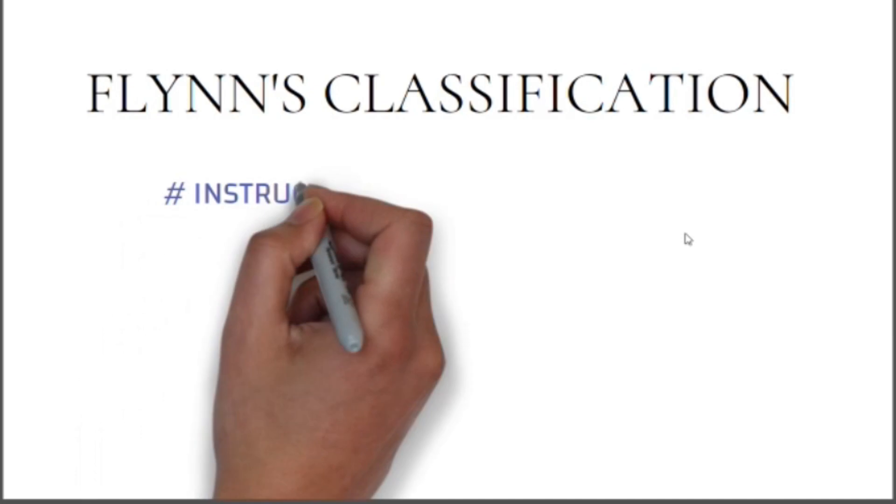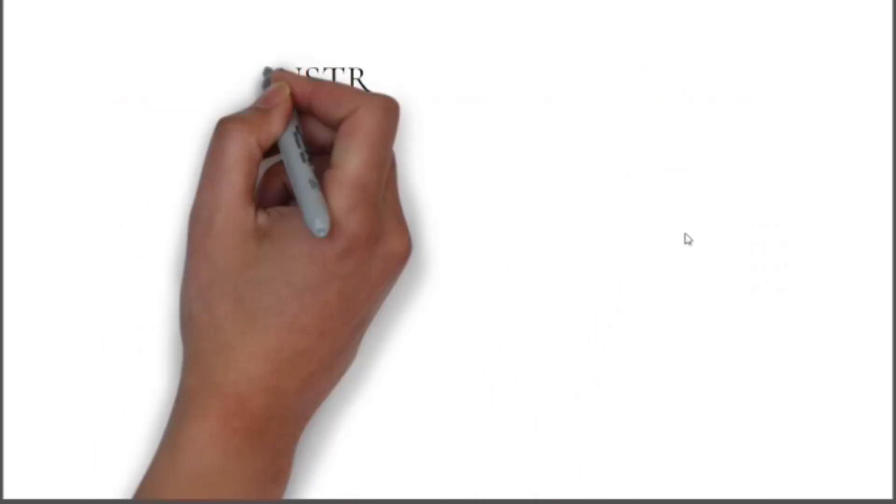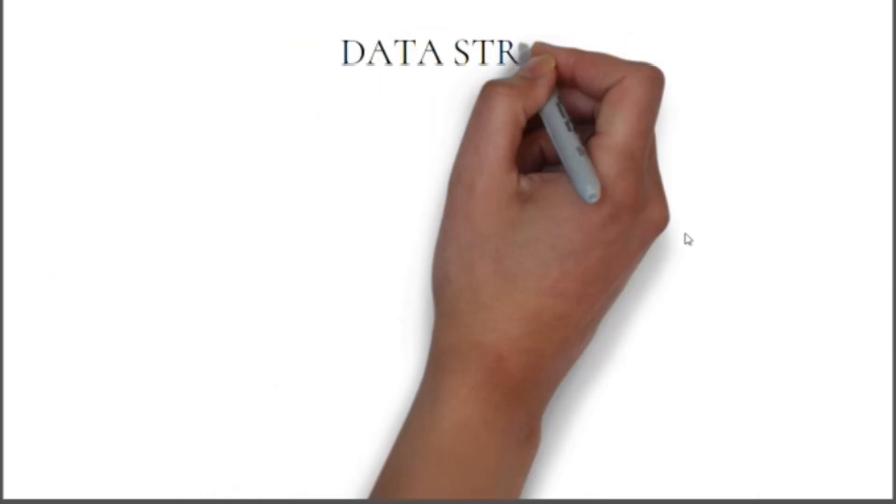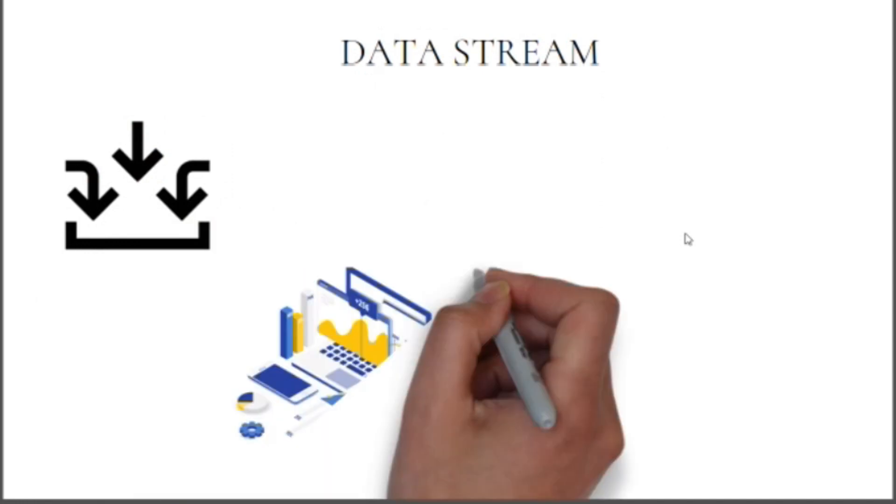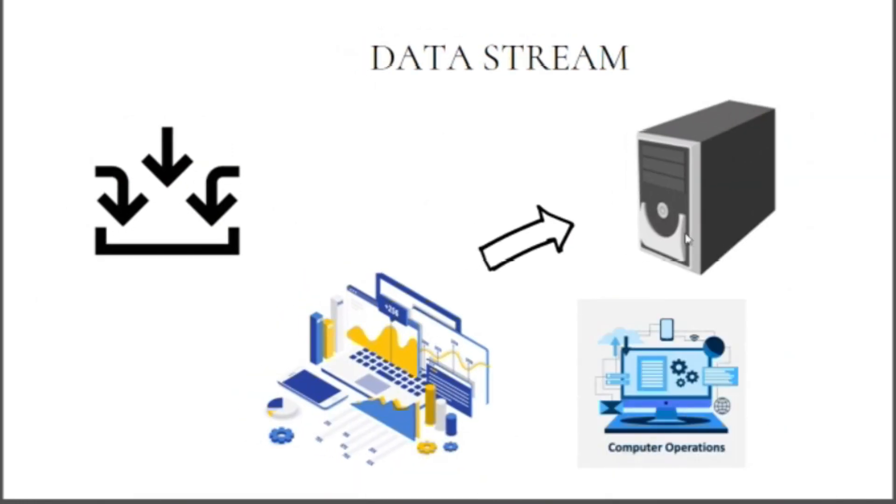In Flynn's classification there are two parts: instruction streams and data streams. Instruction streams are basically the sequence of instructions which are provided to the CPU, and data streams are basically the inputs or the data which is given to the CPU to perform some operations. Based on the number of instructions and the data flow, computing systems are divided into four main categories.